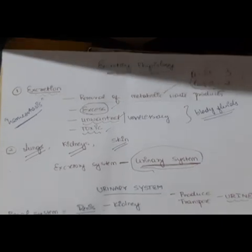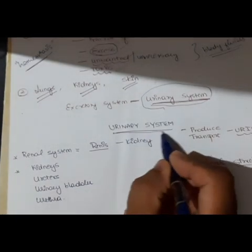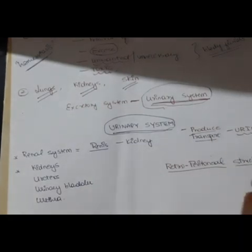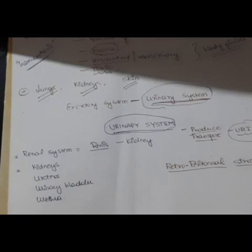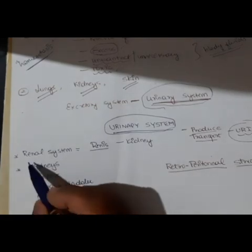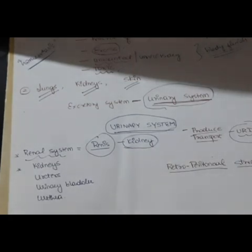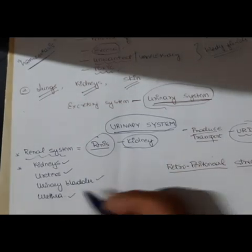The main function of the urinary system is to produce and transport urine, which is the final product that helps in the removal of certain metabolic waste products and unwanted materials from the body. This urinary system is also called the renal system — 'rene' in Latin means kidney. It mainly consists of kidneys, ureters, urinary bladder, and urethra.